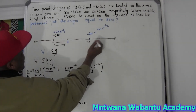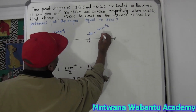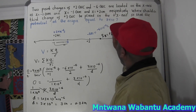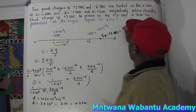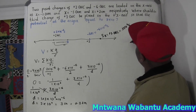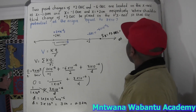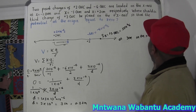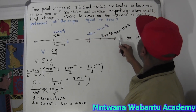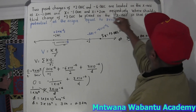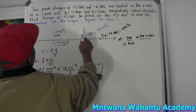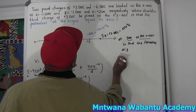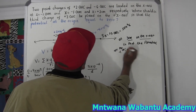Three centimeters to the right means on the number line — zero, one, two, three — the third charge is placed here at position three. So charge three, which is positive three micro coulombs, or three times ten to the negative six coulombs, must be placed at three centimeters on the x-axis so that the electric potential at the origin is equal to zero.